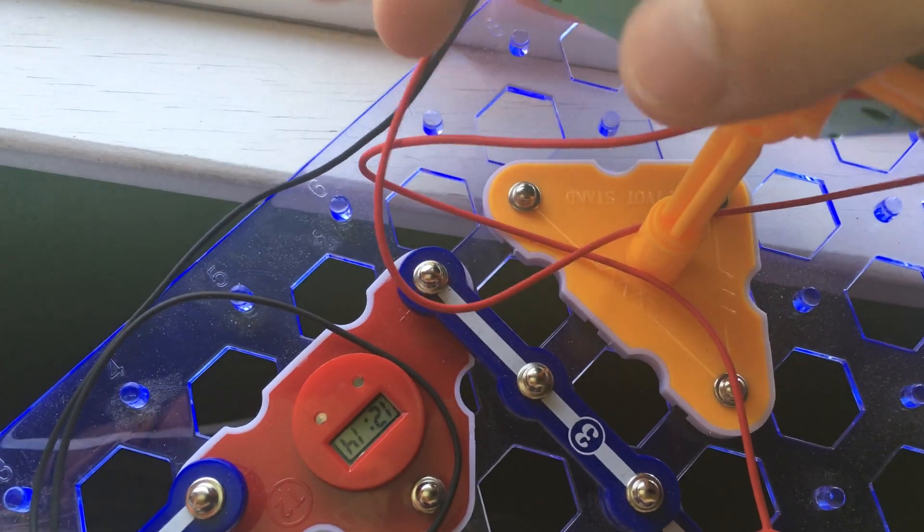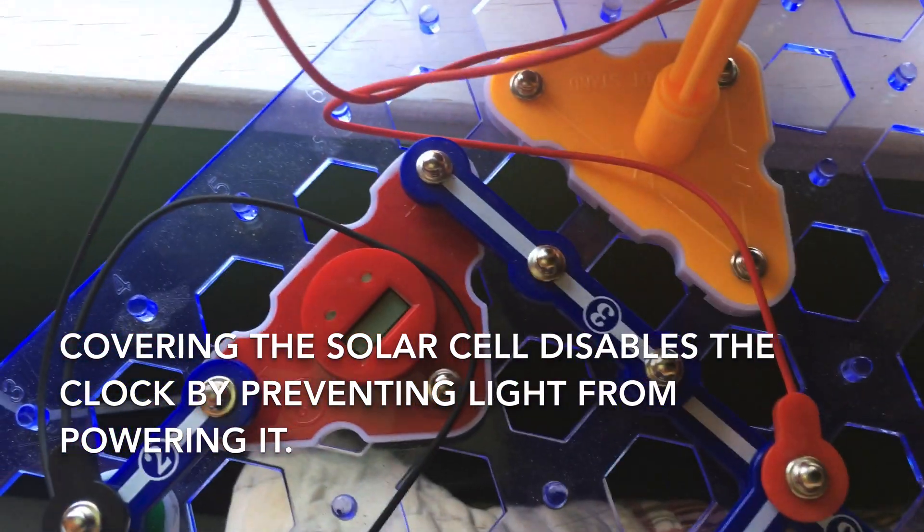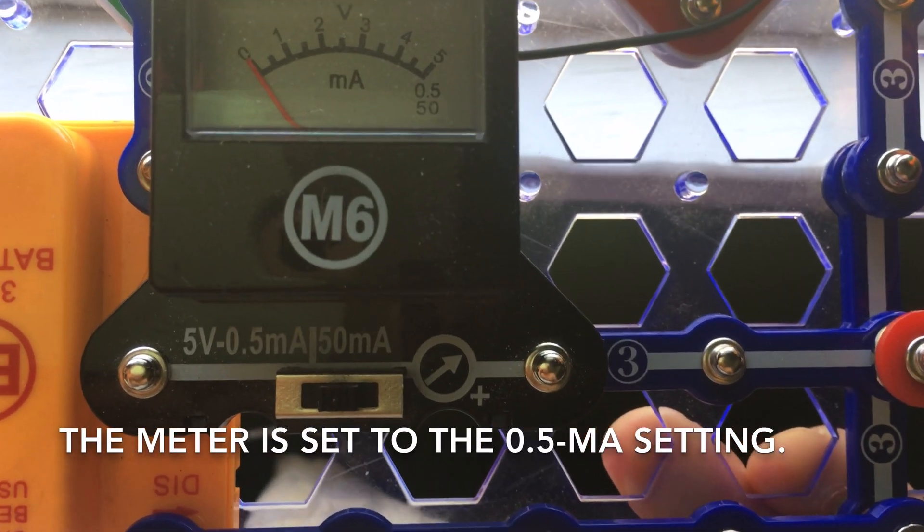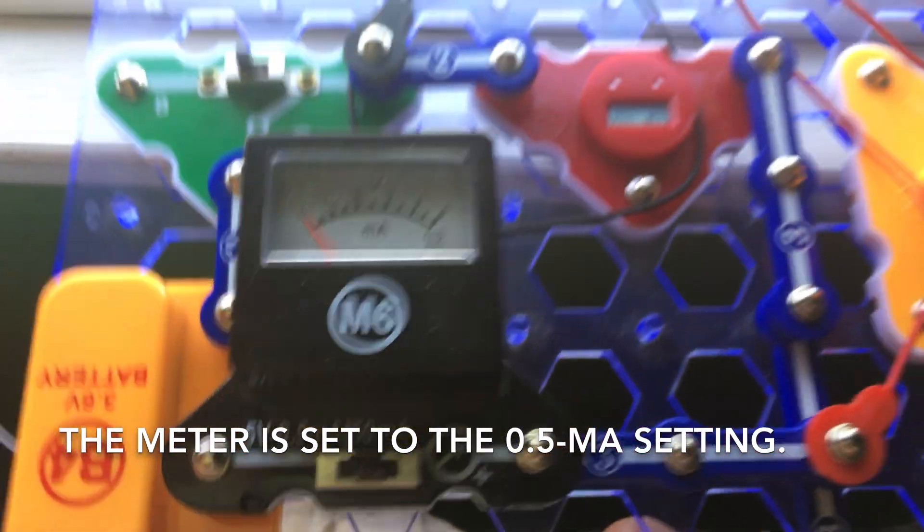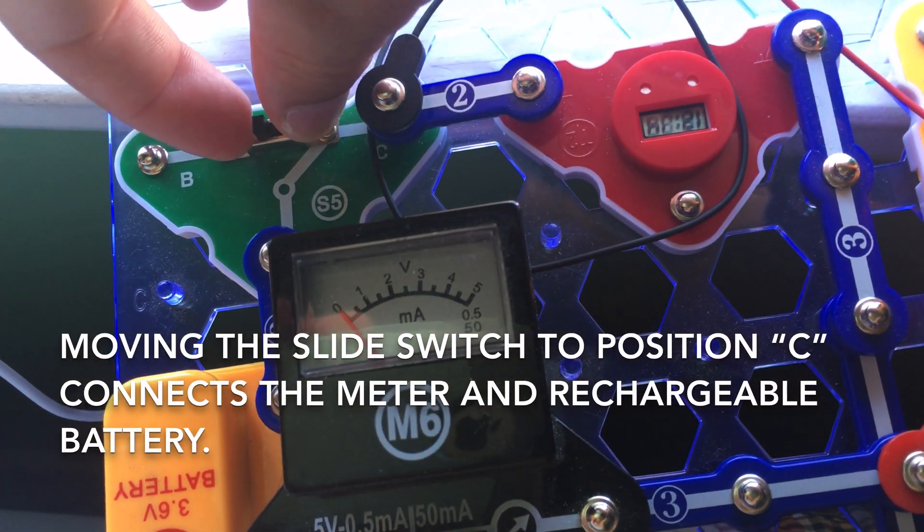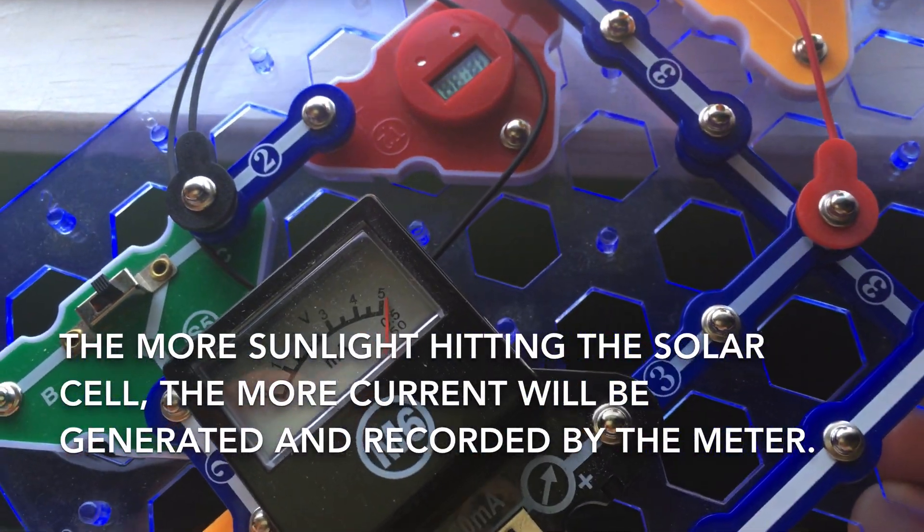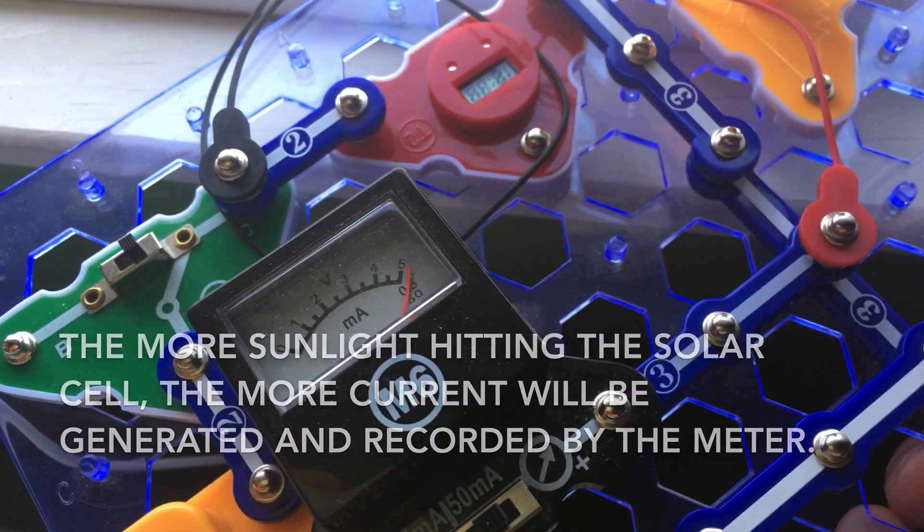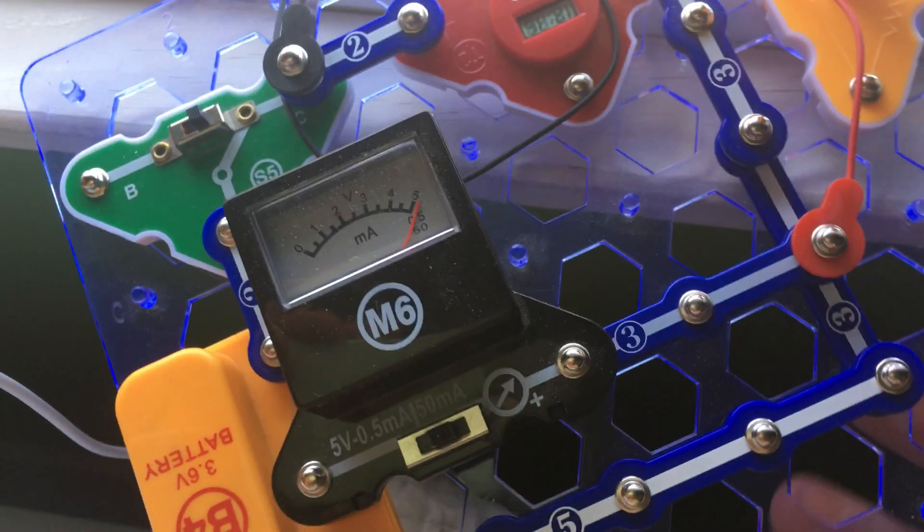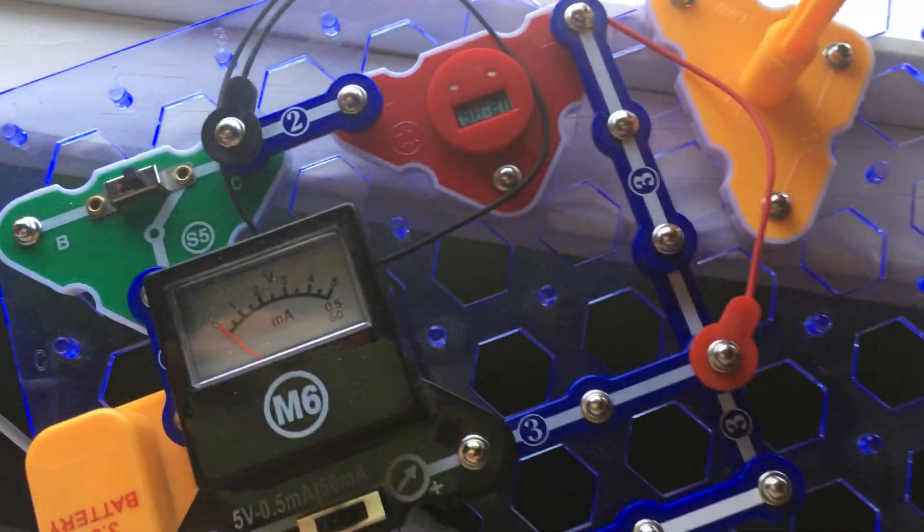But if I was to cover the solar cell, it would turn off completely because no light is getting to the clock. The meter will be set to the 0.5 milliamp setting. And when I move the slide switch to position C, the battery will charge if there's enough sunlight. And you can see that the more sunlight there is, the higher the current that is recorded by the meter over 0.5 milliamps. And then blocking the solar cell will prevent any current from flowing through.